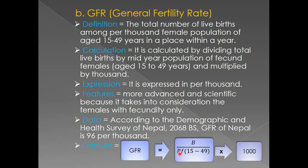General fertility rate is equal to total live births divided by the mid-year population of females in the age group 15 to 49 years, multiplied by 1000. So if you define it by looking at this formula, it is easier: General Fertility Rate is the total number of live births per thousand mid-year population of females aged 15 to 49 years — that is, fecund females.